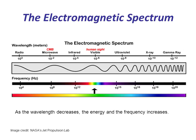At the low energy end of the spectrum, radio waves have the longest wavelengths and the lowest frequency. While at the high energy end of the spectrum, gamma rays have the shortest wavelengths and the highest frequency.